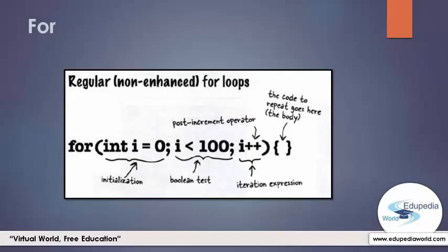Inside the curly braces we can write all of the code that needs to be repeated. The first part is the initialization part. We use this part to declare and initialize a variable to use within the loop body. Most often we use this as a counter variable — in this case it counts from 0 to 100. You can actually initialize more than one variable here, but we will go with just one variable.